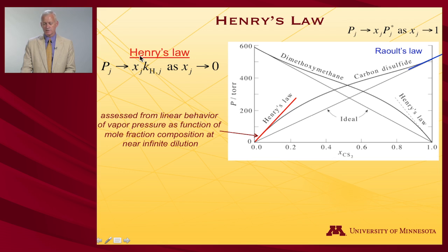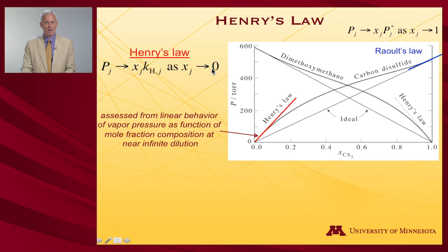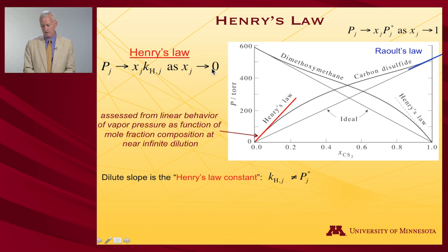Henry's law says that the vapor pressure of a component is linear in the mole fraction, but instead of the slope being the pure substance vapor pressure, it's a slope called Henry's constant — k_H,j — evaluated as x_j goes to 0. So the dilute slope defines the Henry's law constant, and it's not equal to the pure substance vapor pressure.